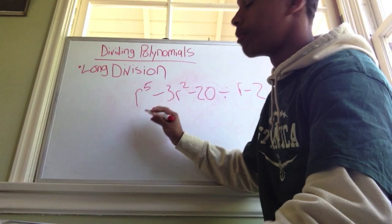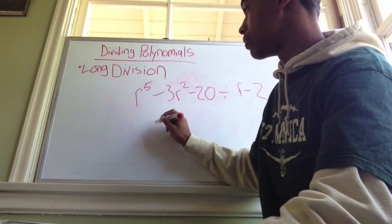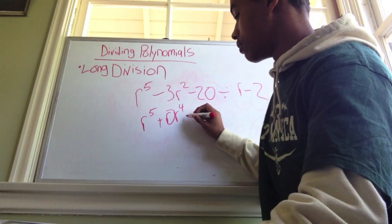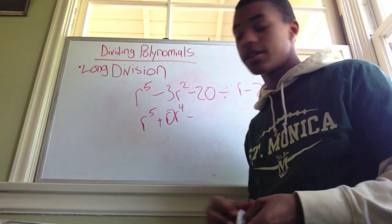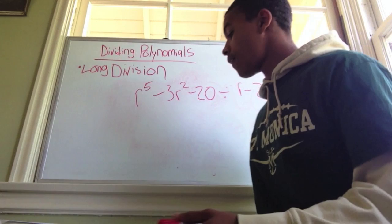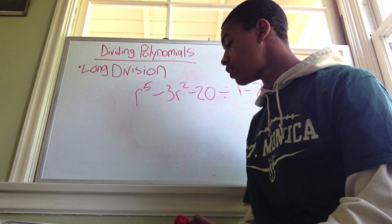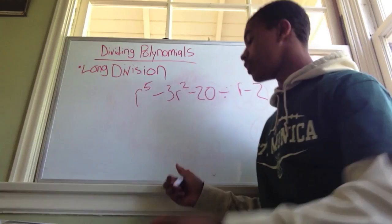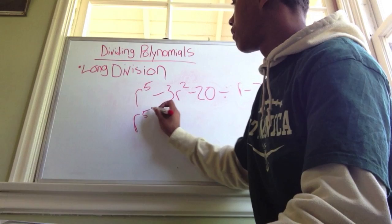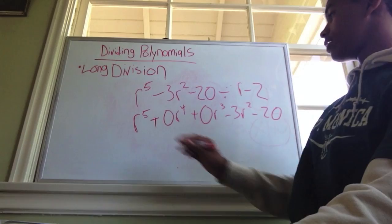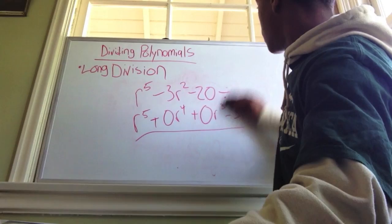The only way to do this is to write a new equation. In the new equation, you're going to add zeros as placeholders. So it's going to be: r⁵ plus 0r⁴ plus 0r³ minus 3r squared plus 0r minus 20. This is your whole new equation that you're going to use.